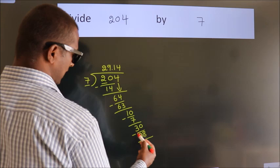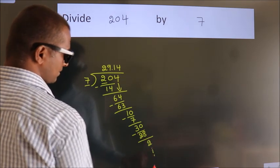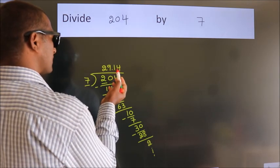Now we subtract. We get 2. And the division continues. It is enough. It is enough if we do up to 2 decimal places.